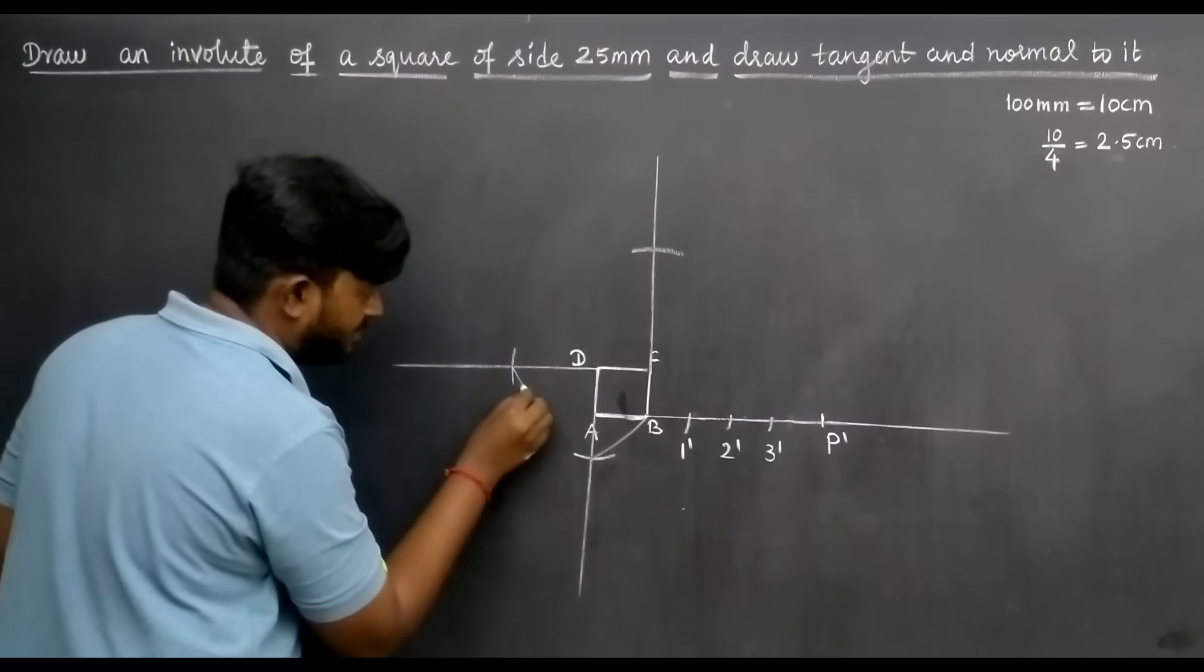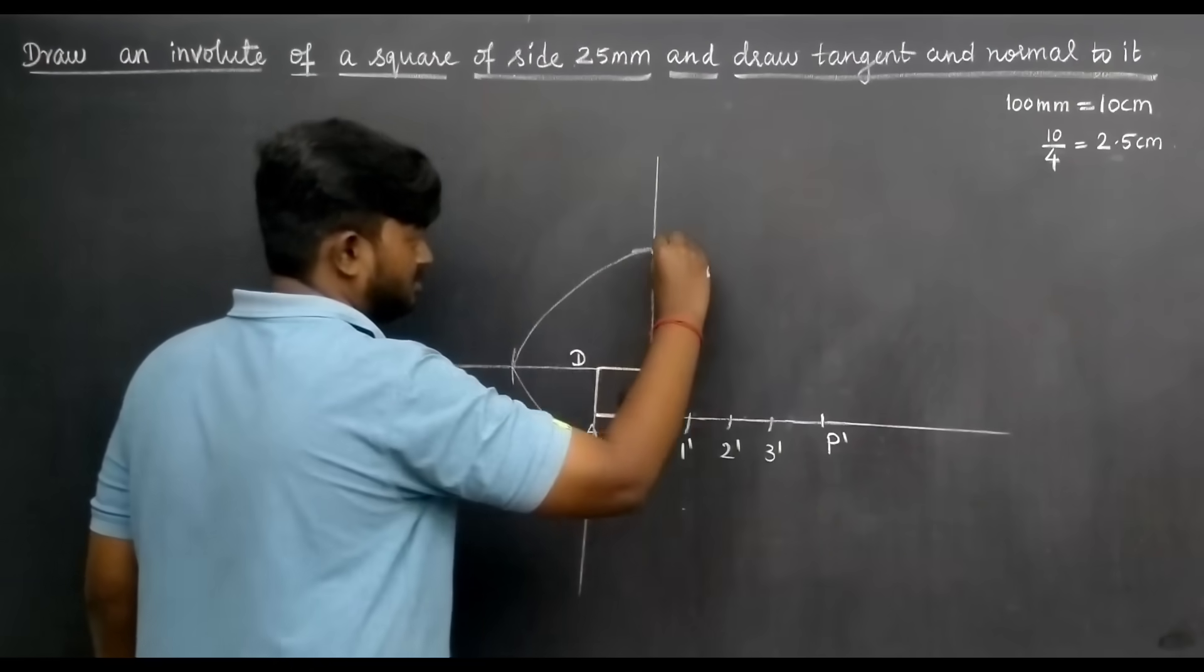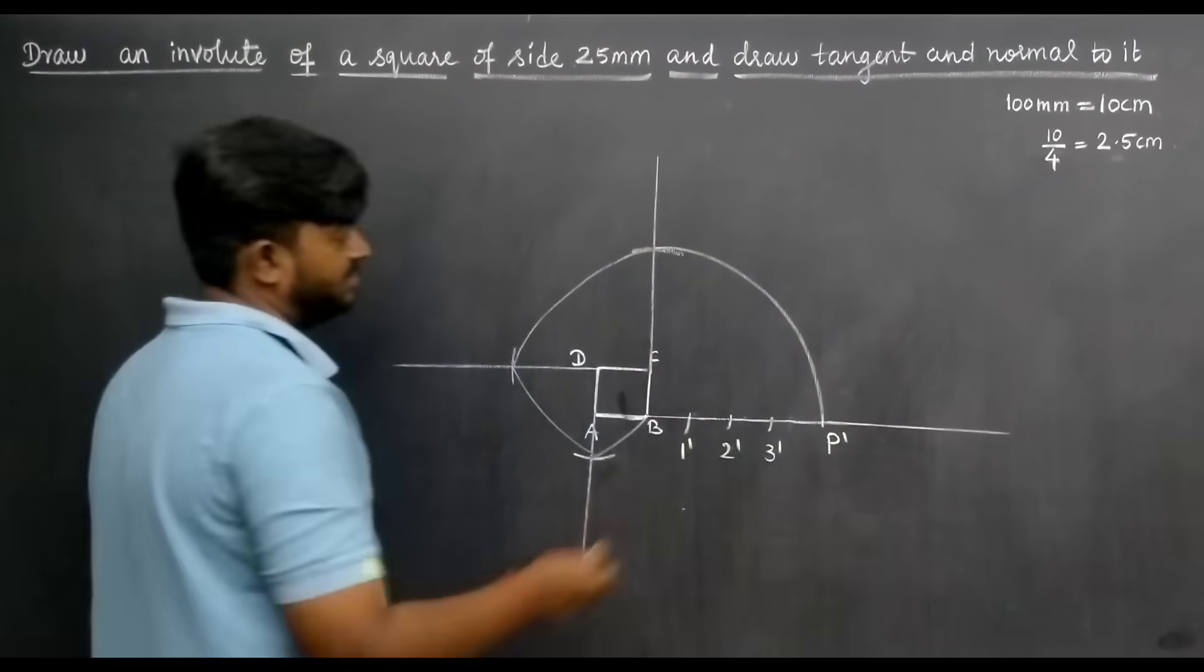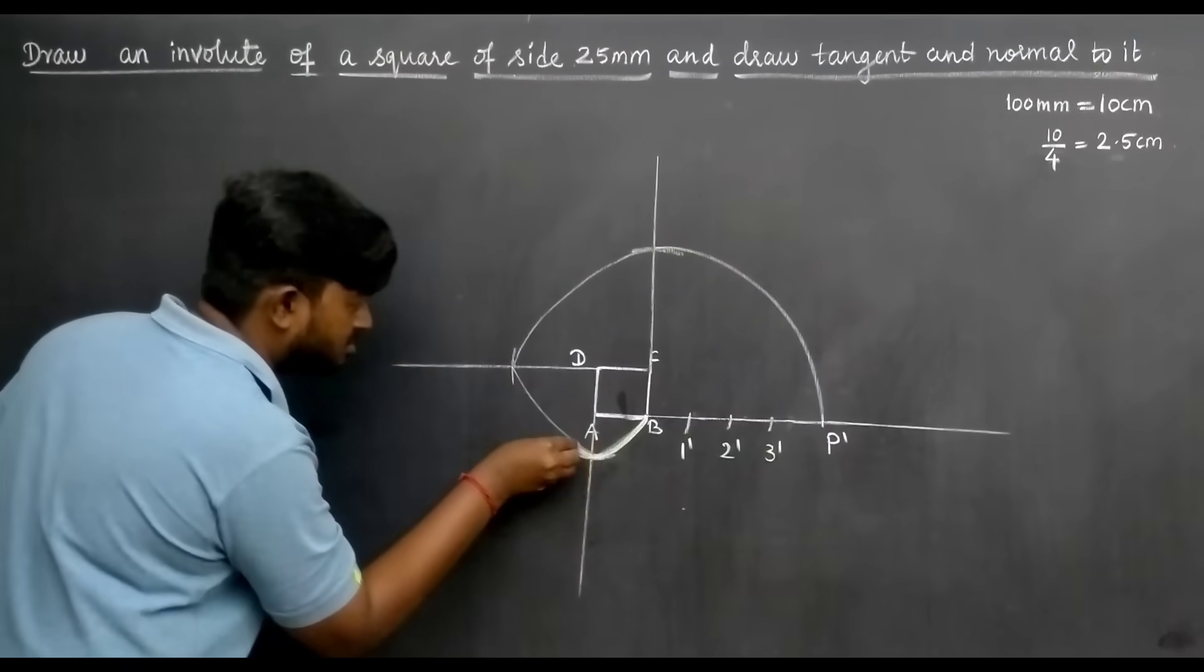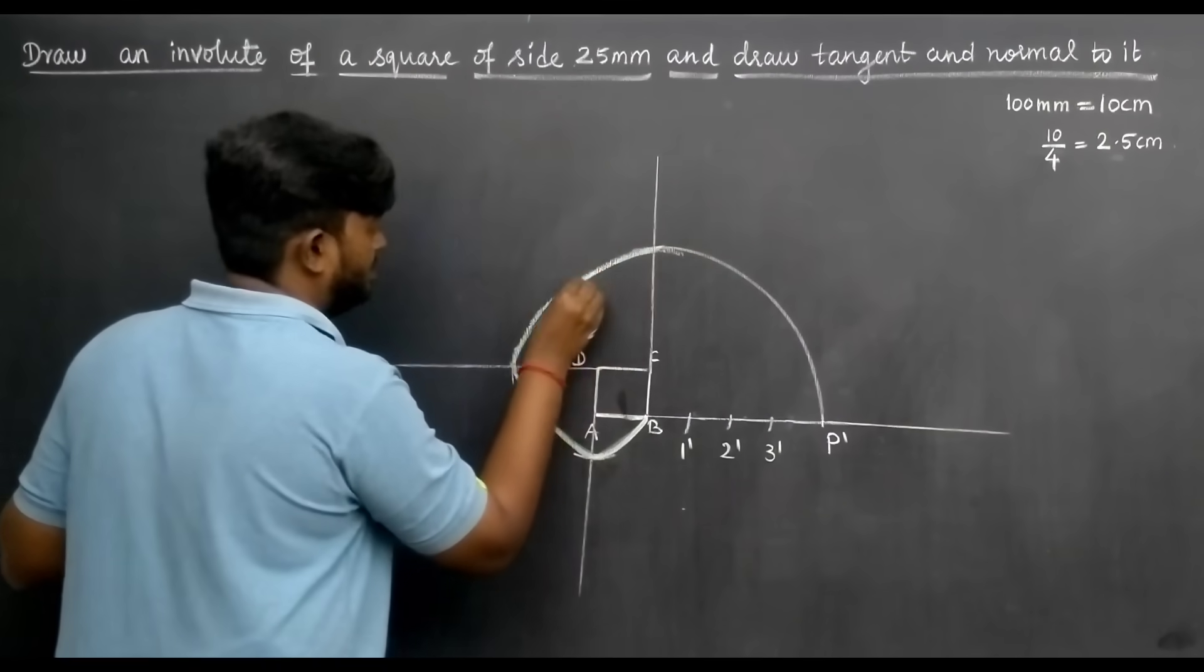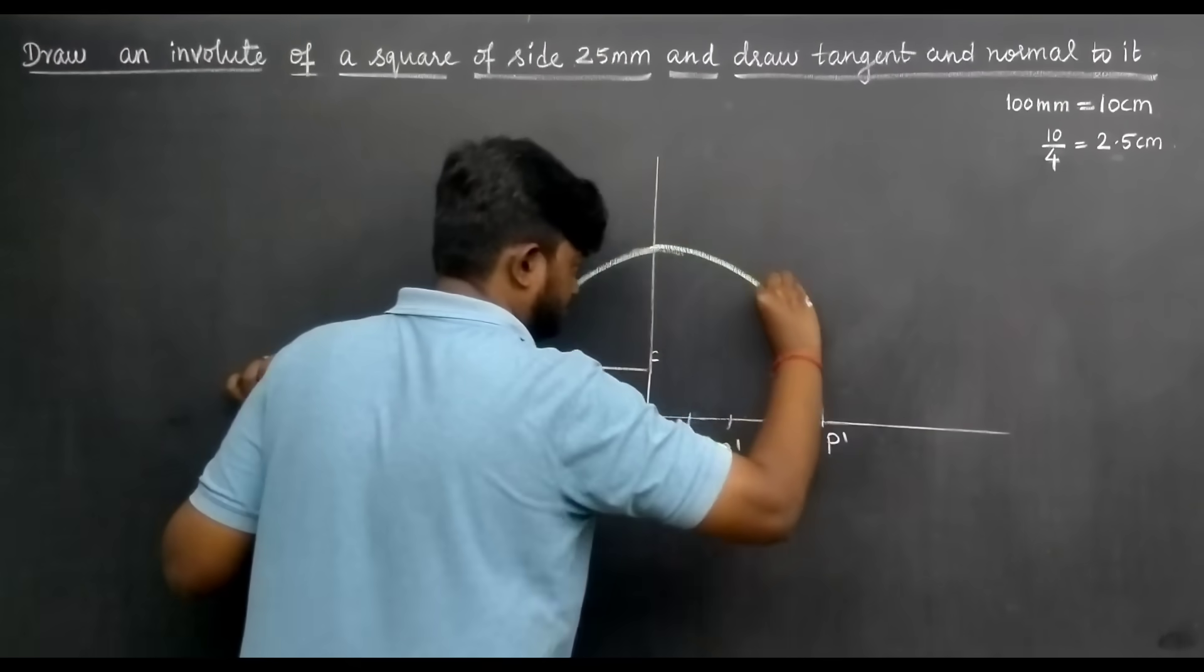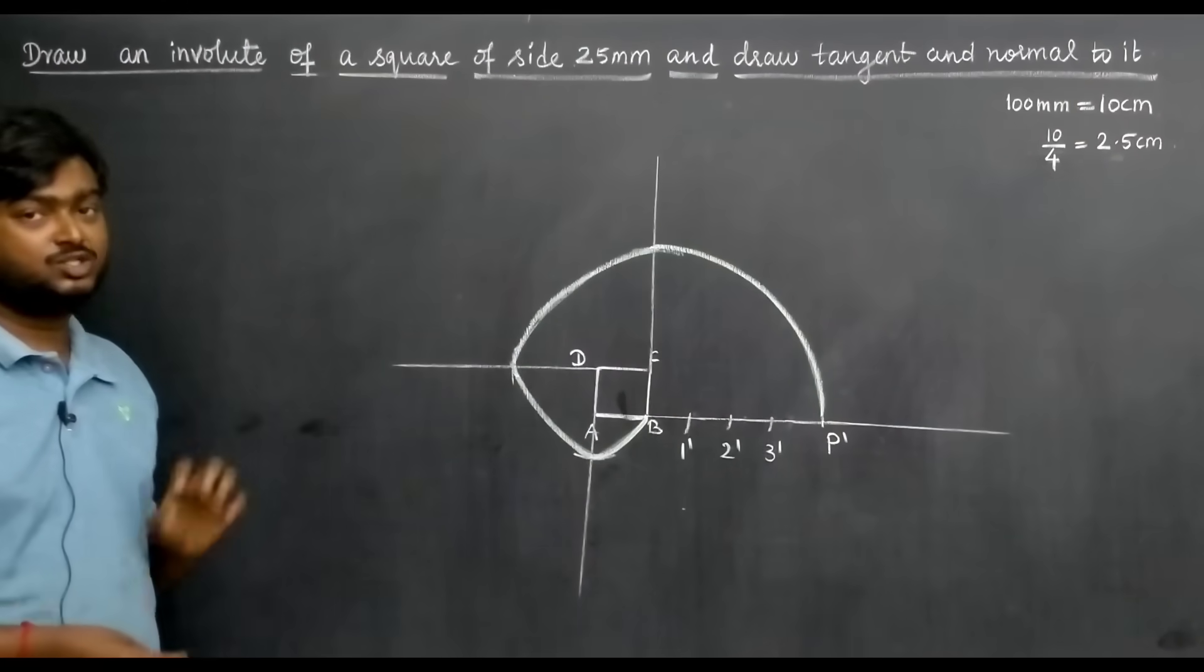Now we find the light curve first, lightly. Then we will make it dark when we finalize the arc. Now we see the arc. This is the involute of the square.